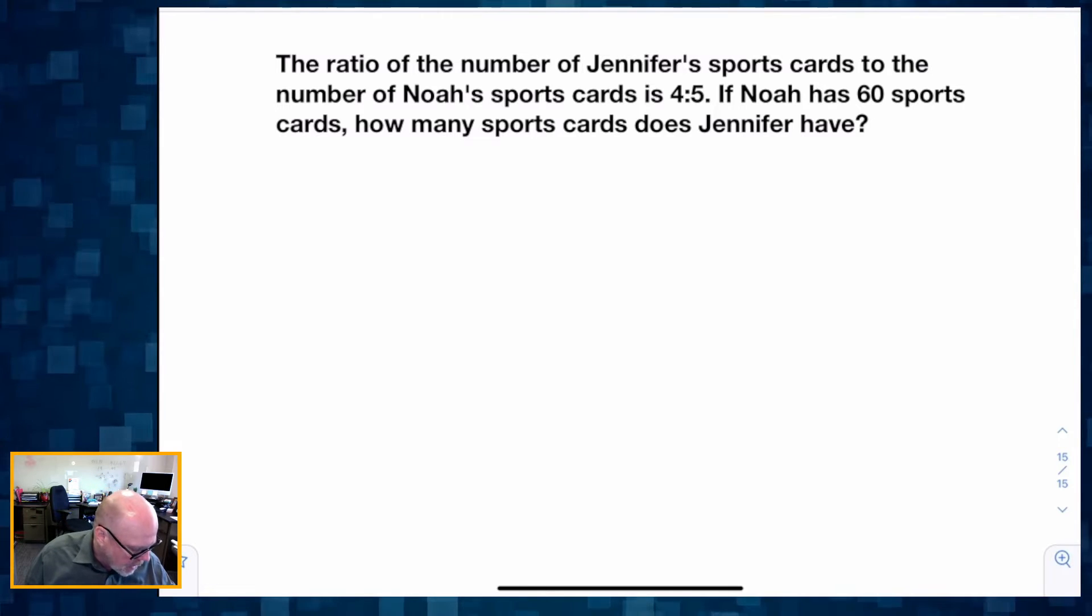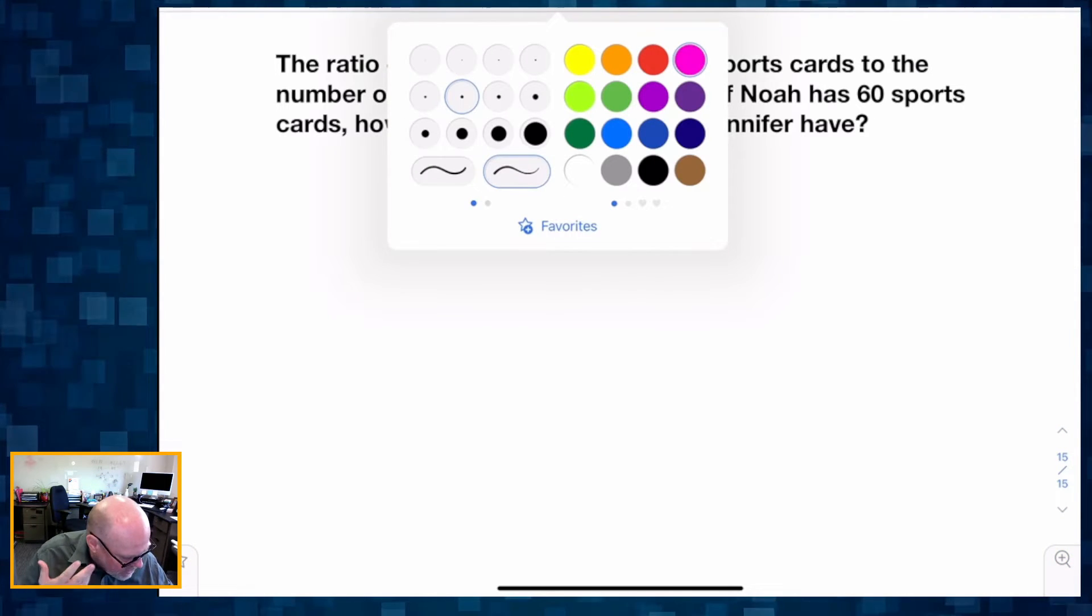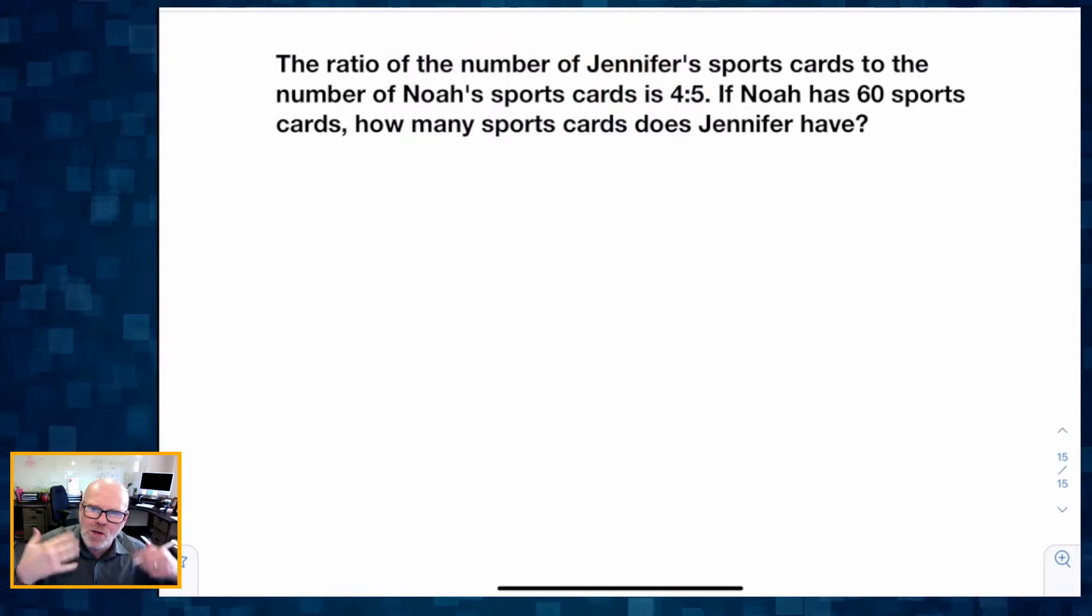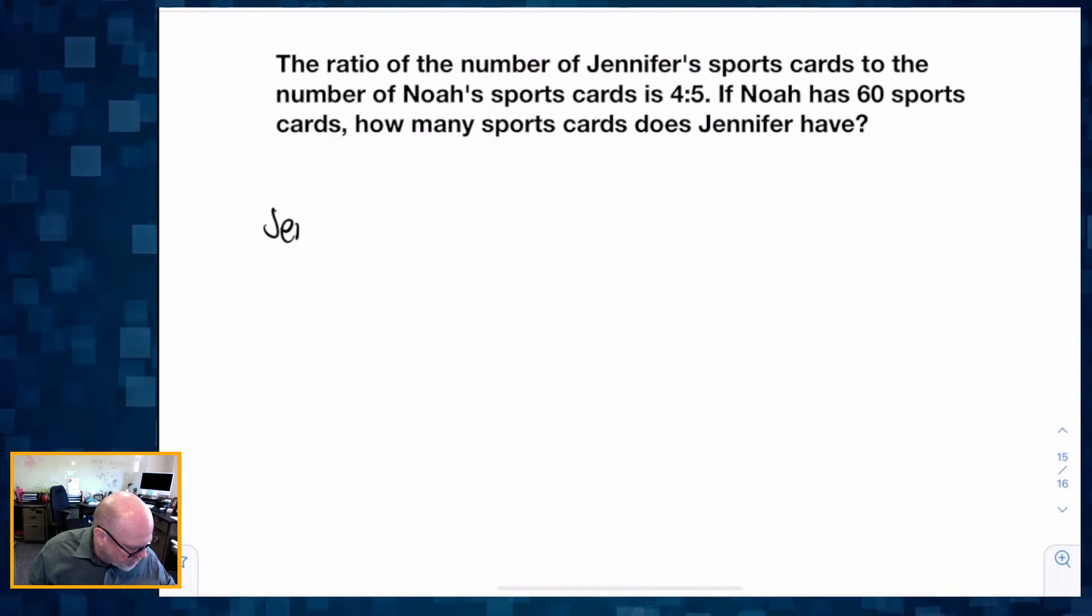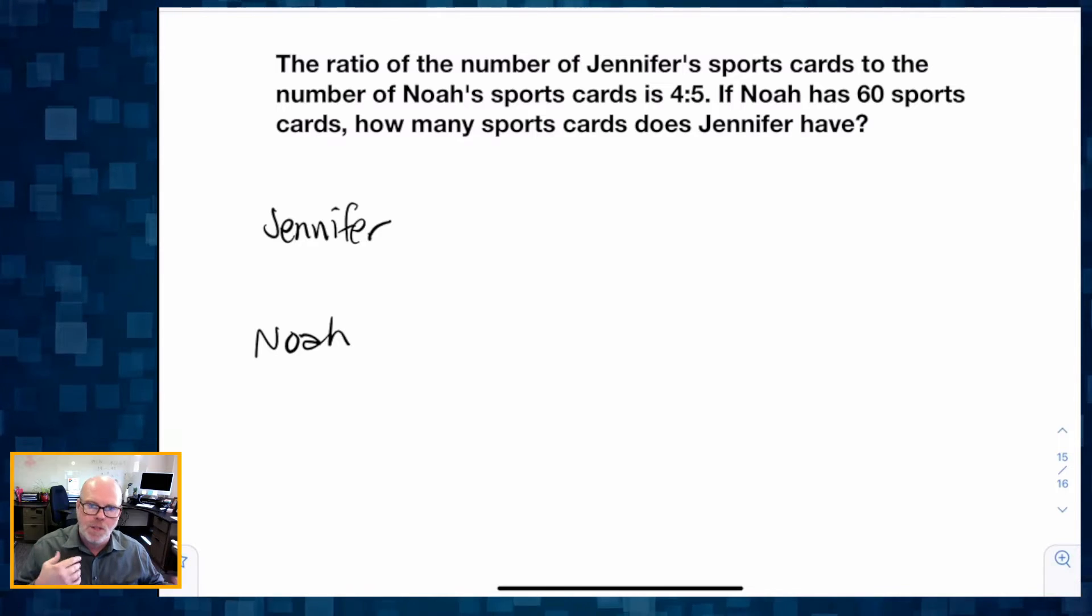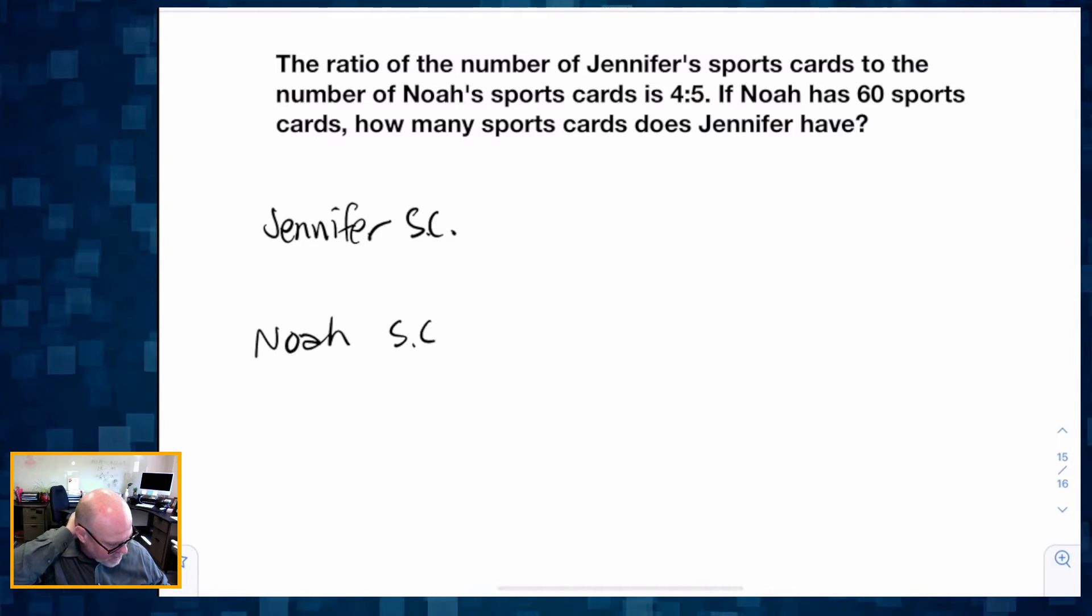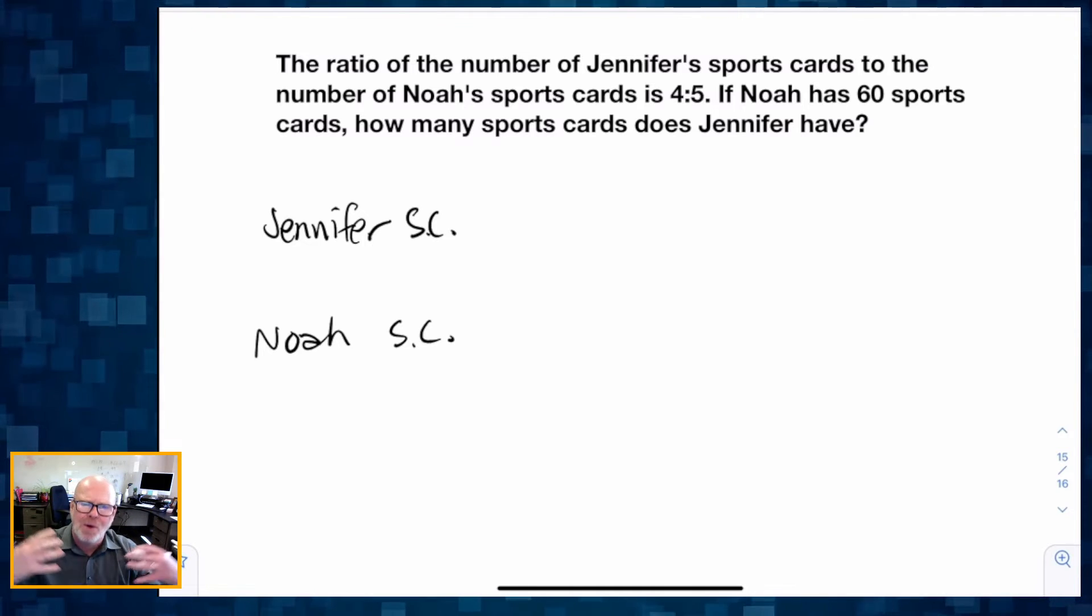We've got two characters in this story. I start with who's in the story - we've got Jennifer and we have Noah. What's going on? Well, Jennifer has sports cards and Noah has sports cards, so I want to really be thinking about this story.